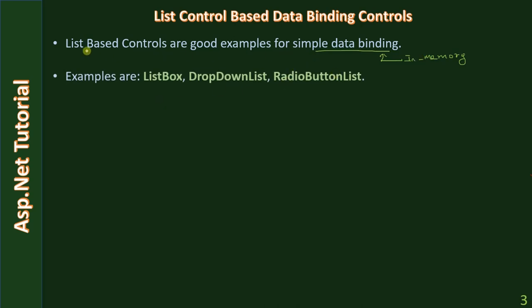Examples of list-based controls are ListBox, DropDownList, and RadioButtonList. These are the best examples for simple data binding which make use of in-memory collections.